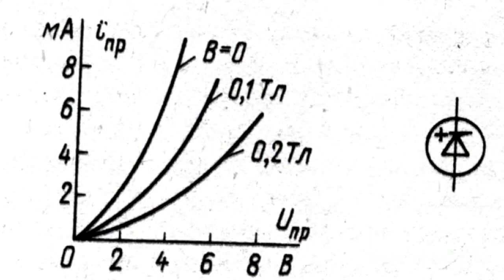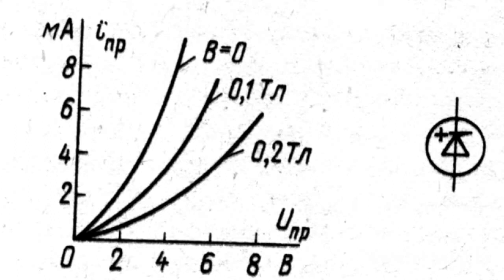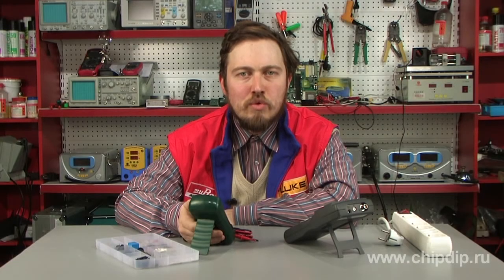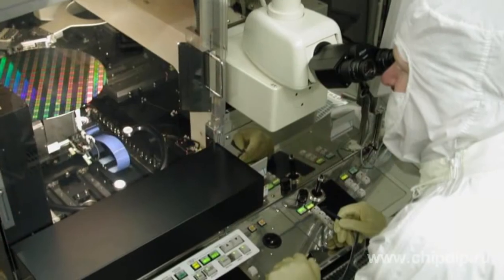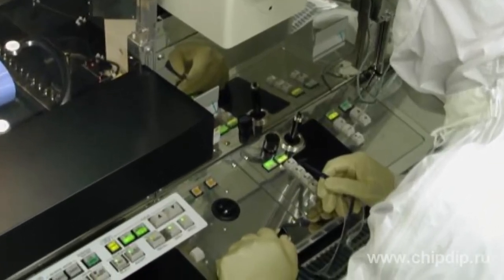The current-voltage characteristics of magnetodiodes clearly show that an increase of magnetic induction causes the direct current to decrease. It should be noted that magnetodiodes are characterized by much higher direct voltage than conventional diodes, due to high base resistance.